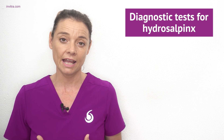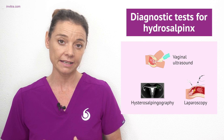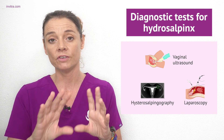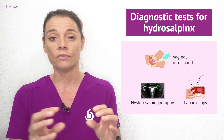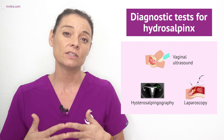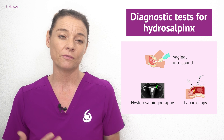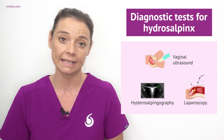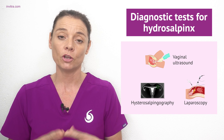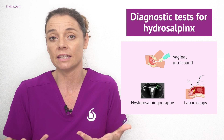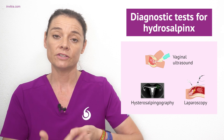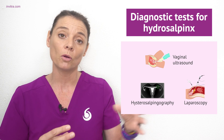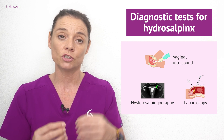There are various tests which are used to diagnose hydrosalpinx. One of these would be a transvaginal ultrasound, in which the gynecologist can visualize using ultrasound the swollen fallopian tube. However, this is not always the best diagnostic method and gives about 15 percent accuracy. Hysterosalpingography is the most commonly used technique to see if there is an obstruction in the fallopian tubes, in which a special dye is inserted into the female reproductive system and then observed via x-rays to see if there is a blockage.